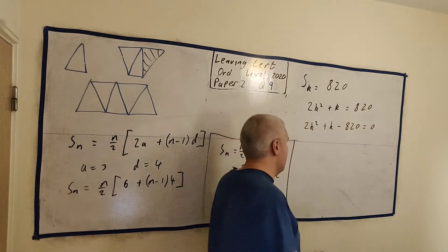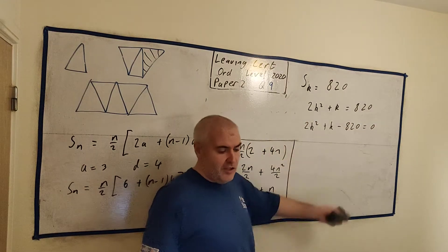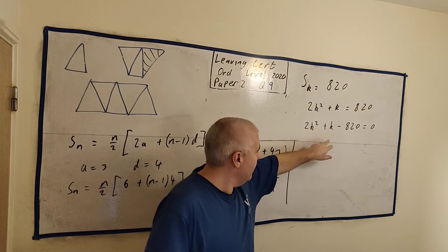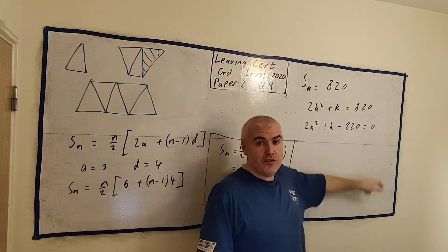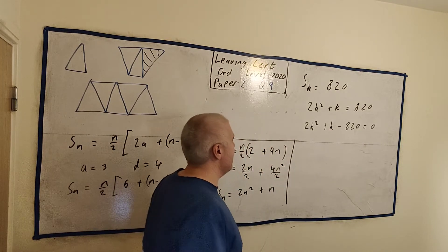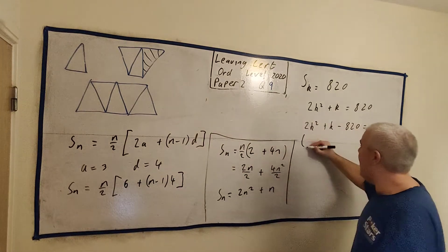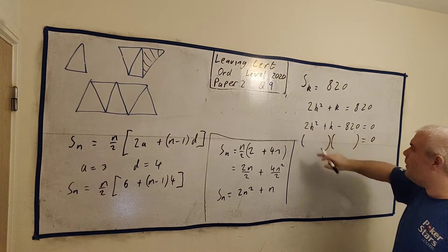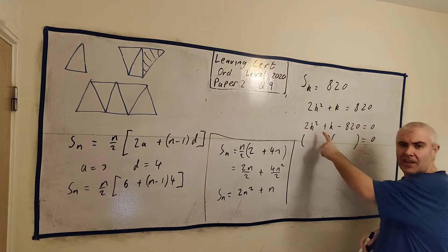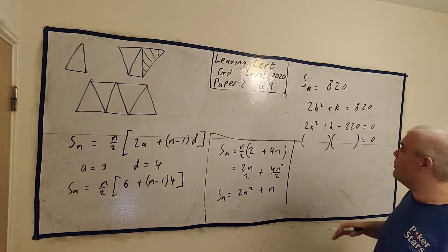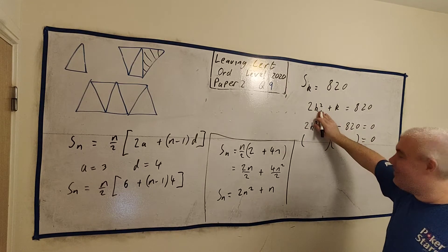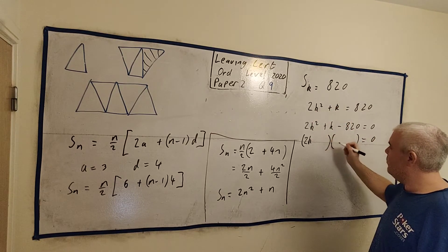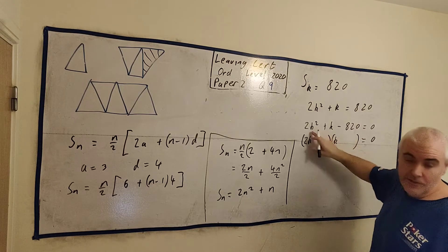Now it's more standard quadratic. There's two ways to answer it. You can use the minus B formula. A is 2, B is 1, and C is minus 820. That's probably the easiest way for most people. But you can factorize this. It's not easy though. If you want to write X instead of K, I know some students are terrified by quadratics without X. That's fine. The examiner will not mind at all.